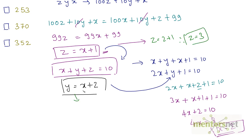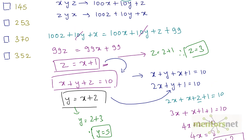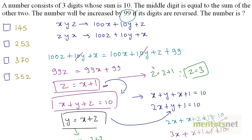Y's value is x plus z. Since x is 2 and z is 3, y equals 5. So the number x, y, z is 2, 5, 3. The answer is 253.